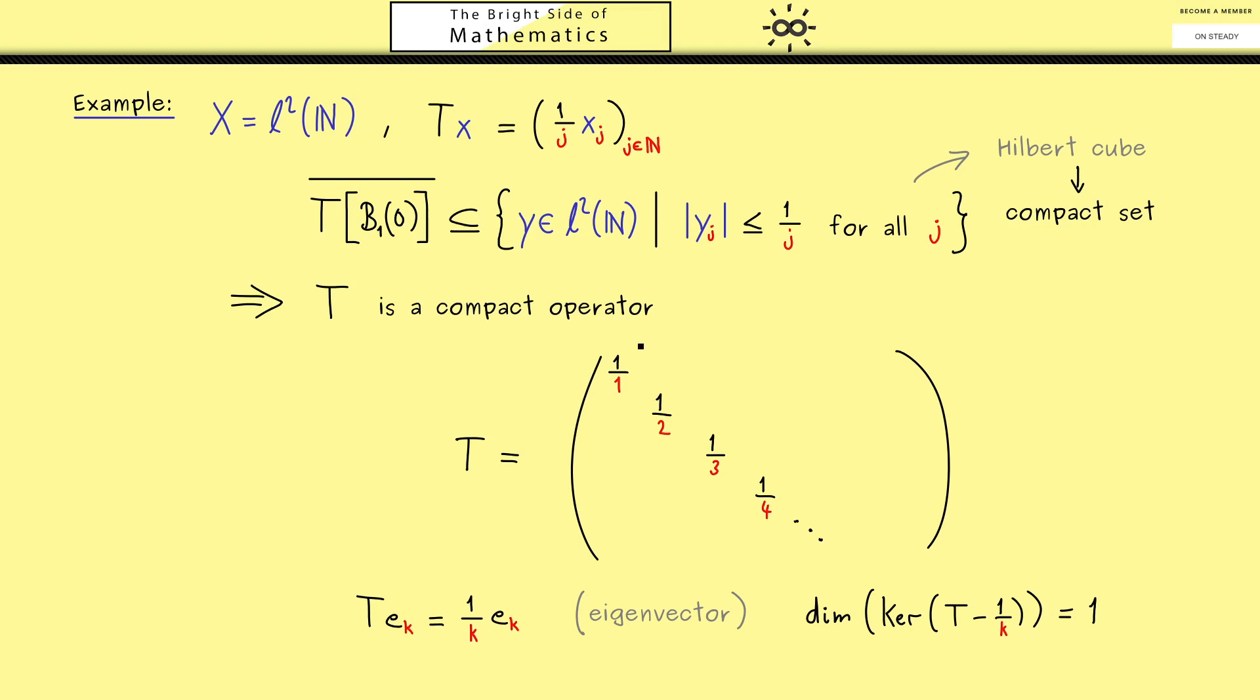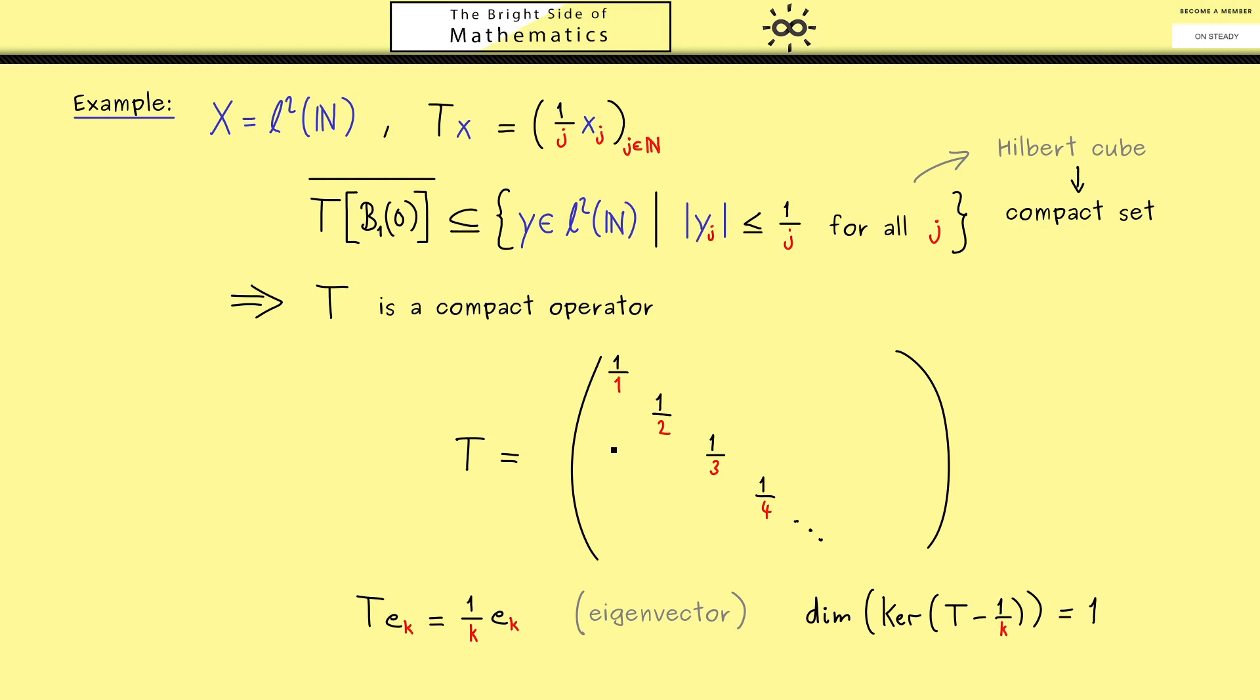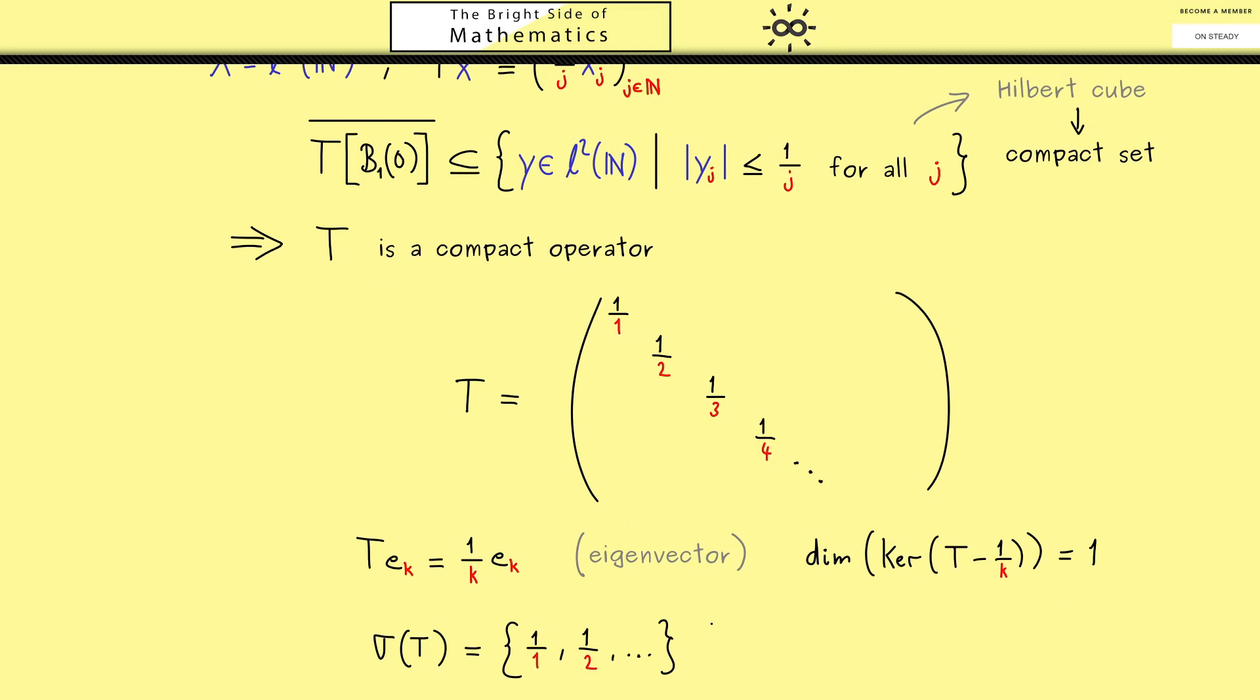And then we see this is the spectrum with eigenvalues and the sequence converges to 0. So this is what we know from before, if we have infinitely many eigenvalues this sequence has to converge to 0. In other words we can immediately write down the spectrum of this operator. So we simply have the eigenvalues and 0.